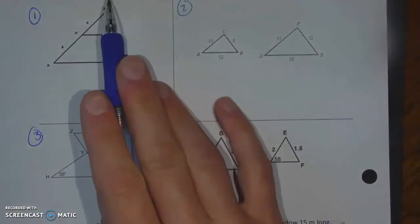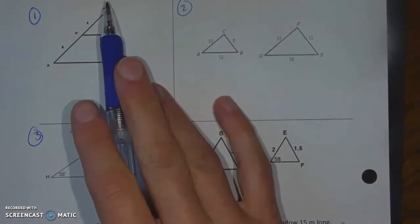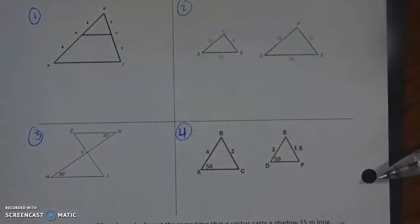say AA, SSS, or SAS, whichever one tells you that they're similar. And if they're not similar, in order to explain why not, you might just say one side is not proportional, or the angle's in the wrong spot, or I don't have enough information, or something like that.